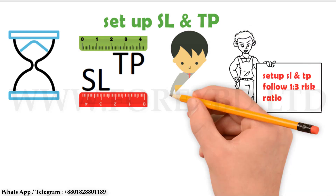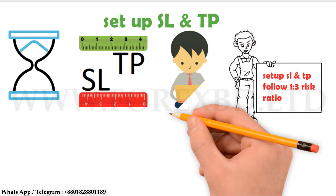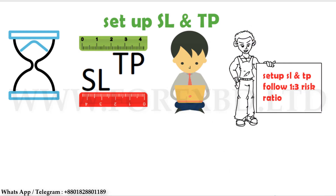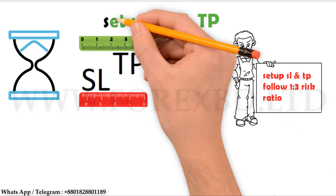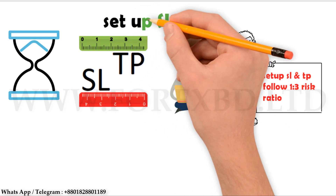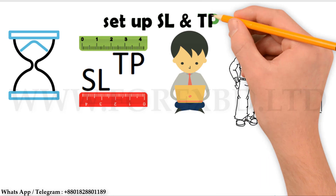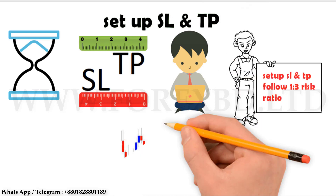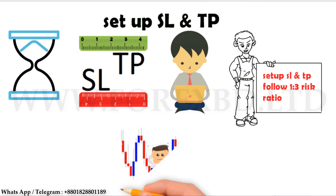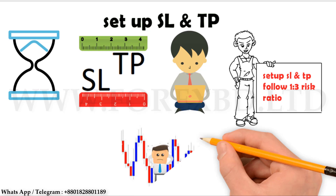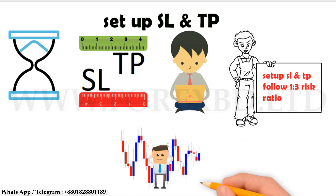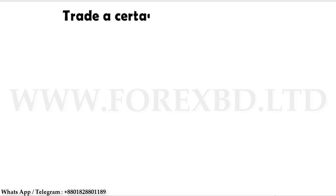Closing an entry without following the specific profit ratio is foolishness, because the market moves in its own way. You must follow rules and regulations. Look at the back points and set your SL and TP, because the market is more likely to come up to the back point. Be sure to set SL and TP by looking at back points.